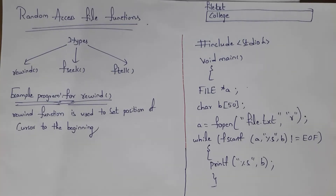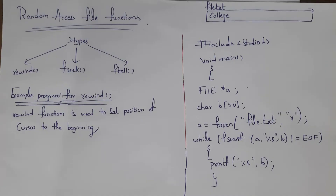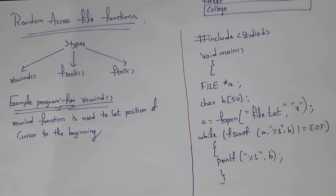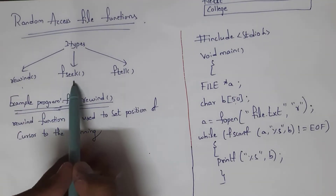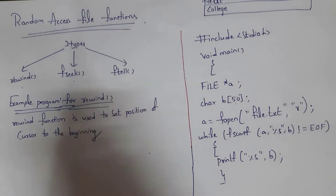Welcome to my channel. In this video I will be covering random access file functions in C. I have uploaded complete PPS subject tutorials; I will provide a link in the description. Random access file functions are classified into three types: first is the rewind function, next is the fseek function, and last is the ftell function.